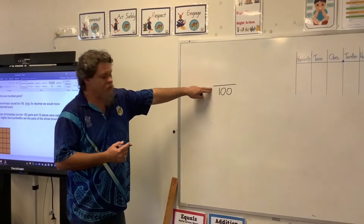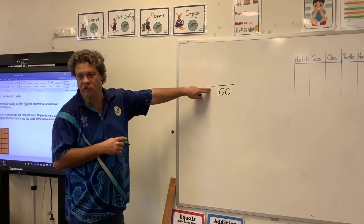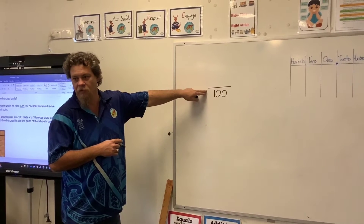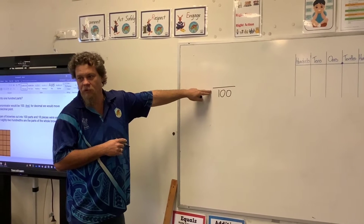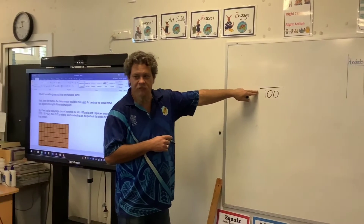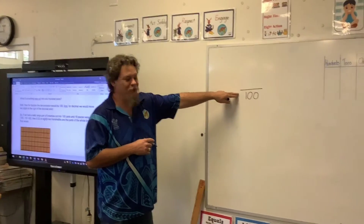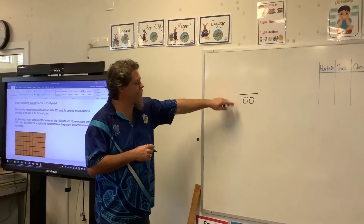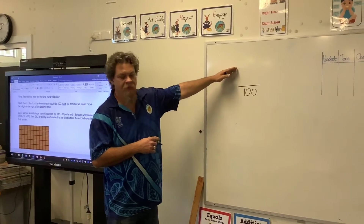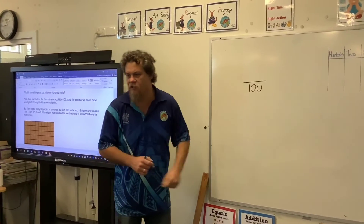We know that this line is called the vinculum, but what does it mean? What does the vinculum say? It means divide. So whatever it is has been divided into a hundred parts.